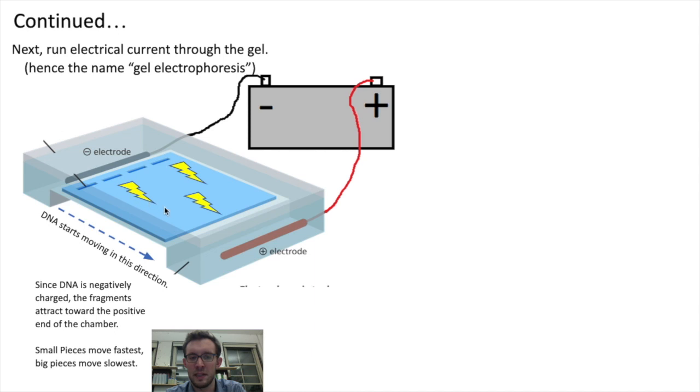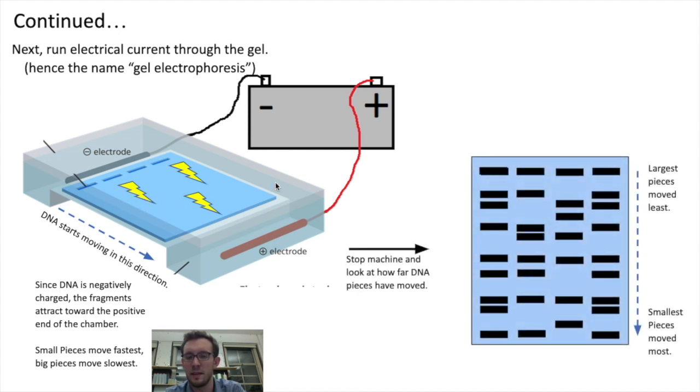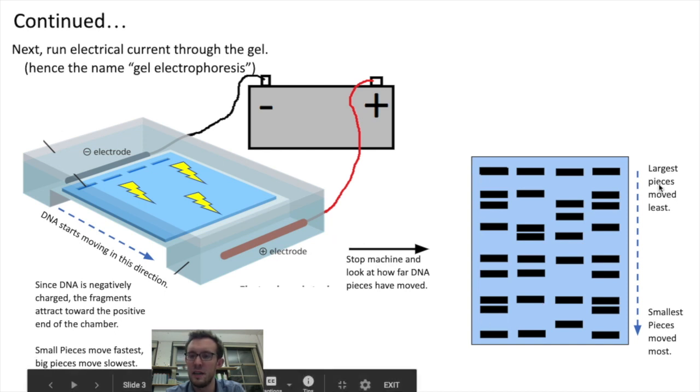So after a while of running the electrical current through the gel, biologists will shut the machine off, and they'll stop, and they'll see how far the different pieces of DNA have moved. Again, the largest pieces, because they're moving the slowest, will have moved the least amount, and smaller pieces will have moved the most, will have been moving the fastest.